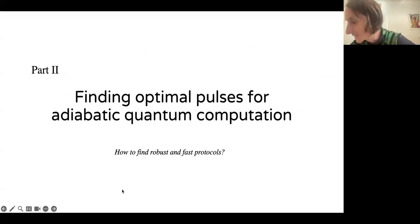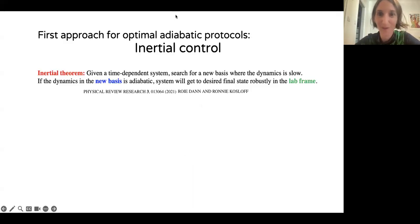This brings me to the second part of the talk about finding optimal pulses for adiabatic quantum computation. Usually in adiabatic quantum computation, we actually want to be far away from exceptional points. We want gapped systems. The advantage of adiabatic protocols is that they are robust. For example, in encircling an exceptional point, it doesn't really matter how I encircle it. It matters that I encircle it. So the details of the protocol many times don't matter. They're robust to certain types of errors. But adiabaticity requires going slowly. So the question is, how can we find protocols that are as robust as adiabatic but faster?